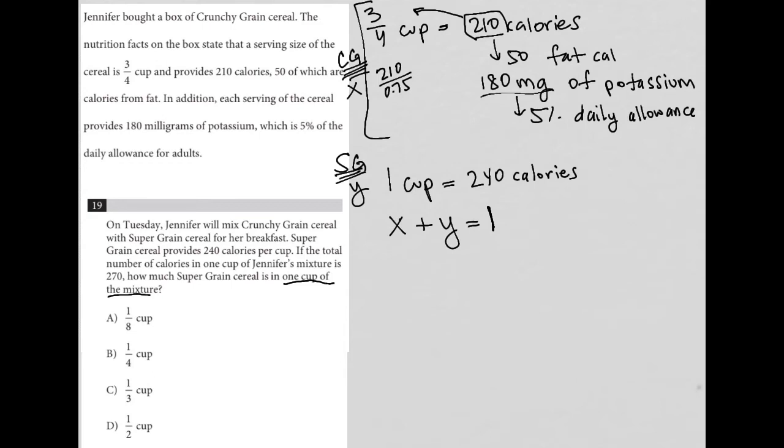And when I do that in my calculator, I get that this is equal to 280 calories per cup. So again, not knowing how much of the crunchy grain cereal we have, I do know if I multiply that amount by 280, I'd get the amount of calories, right, contributed to the mixture by the crunchy grain cereal. And the same thing for, in fact, let me erase this, keep this here.